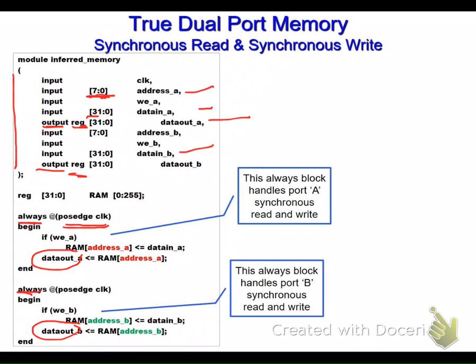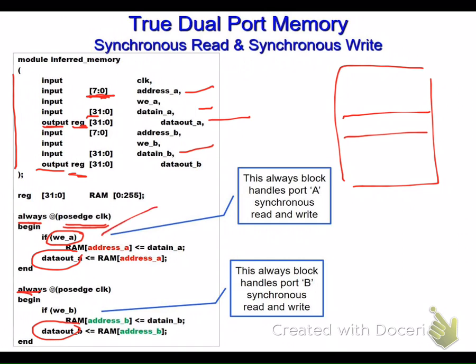If the write enable of port A is active, we write to the RAM at the slot corresponding to address A — for example, slot number two. Whatever is in data input A gets written to that slot. This is done under the condition of a positive edge clock.